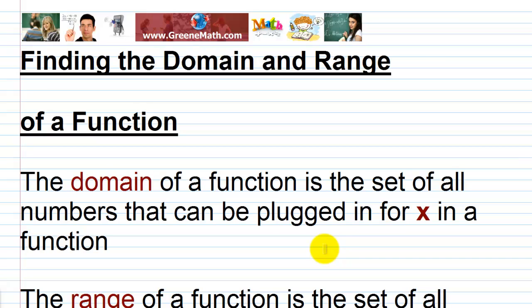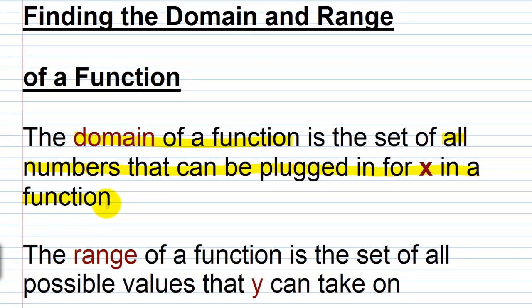The domain of a function is the set of all numbers that can be plugged in for X — basically the set of all permissible values. What can X take on? Similarly, the range of a function is the set of all possible values that Y can take on. As we do some examples you're going to see what this really means.